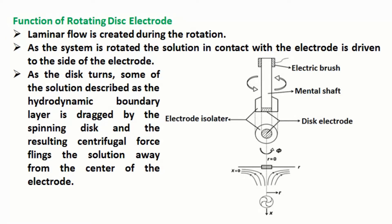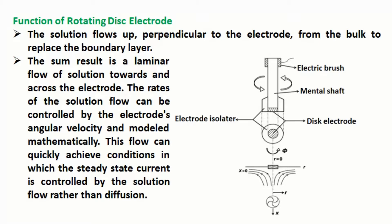As the disc turns, some of the solution described as the hydrodynamic boundary layer is dragged by the spinning disc and the resulting centrifugal force flings the solution away from the center of the electrode. The solution flows up, perpendicular to the electrode, from the bulk to replace the boundary layer.